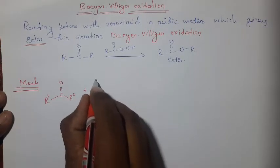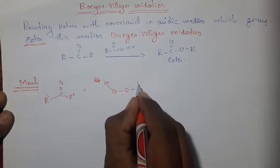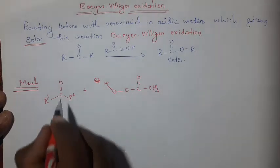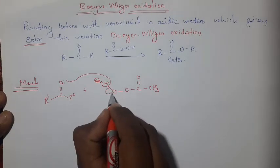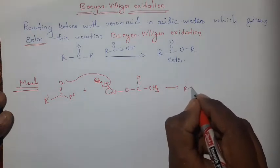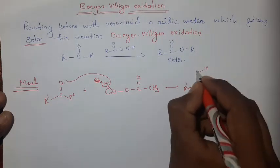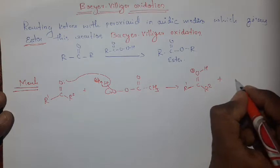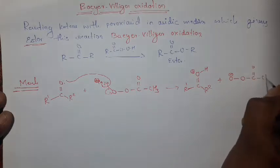For example, this is our peroxy acid (CH3CO3H). This oxygen abstracts this proton. At that time, these bonds are shifted to oxygen, then it becomes R1–C=O with H and a positively charged oxygen, and this R2, plus this becomes a negatively charged oxygen O⁻–O–C=O of the acyl group.